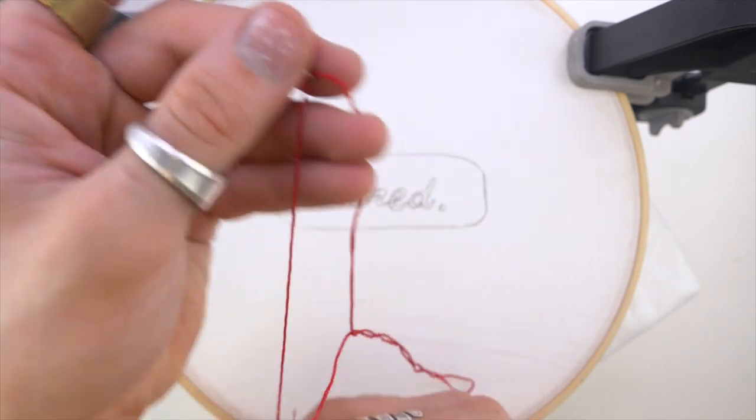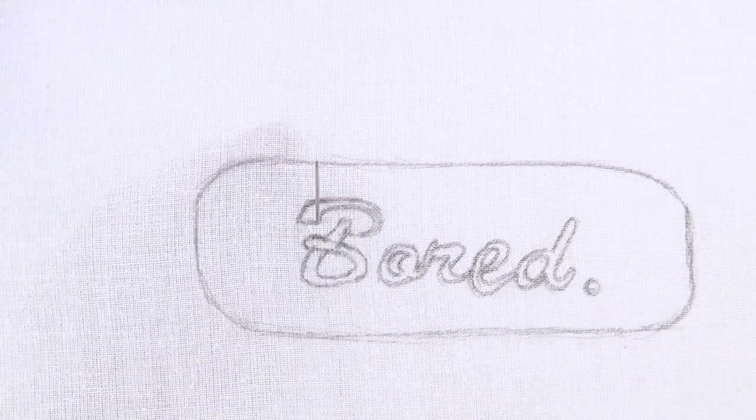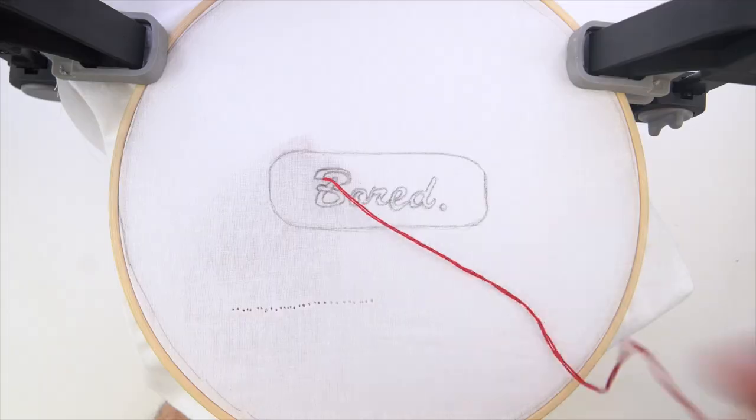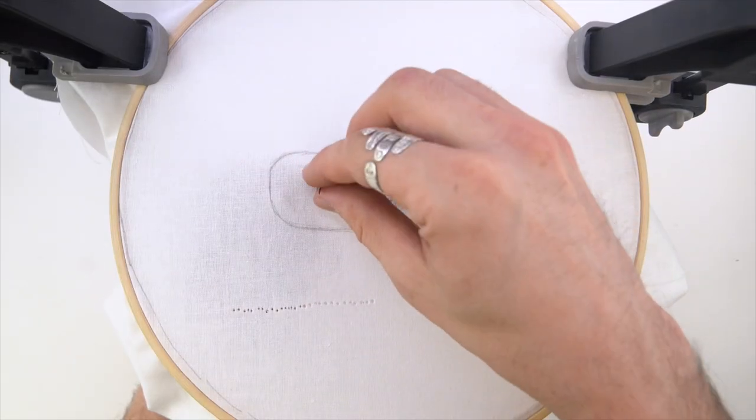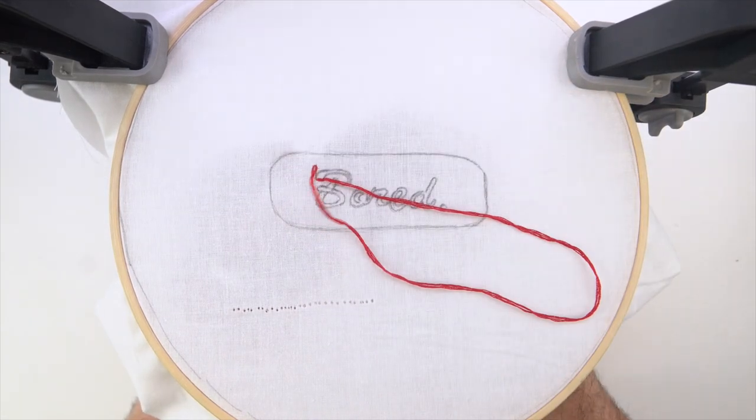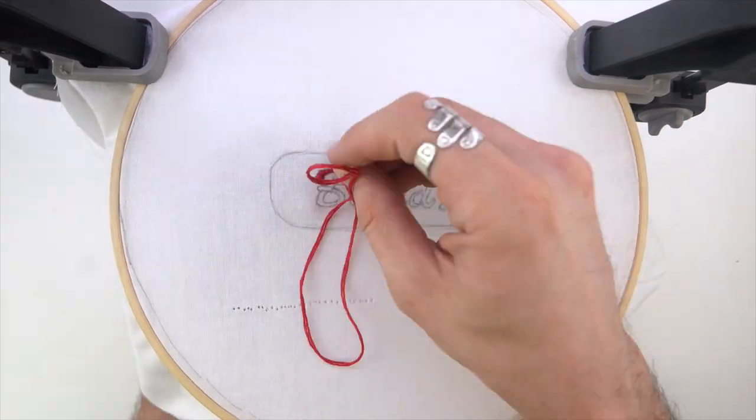So I went and loaded up the needle, threaded the needle, put a knot in the end, just came up from the bottom, pulled up. And I'm going to go along the edges of the text. So it kind of flows like I'm writing it.